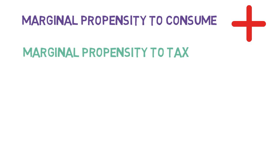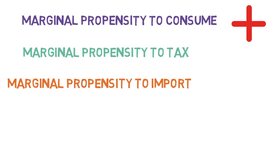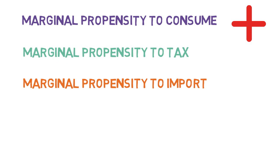However, there are leakages in the economy: the marginal propensity to tax — how much is taken away in tax by the government — and how much of extra spending leaks out of the economy through imports, which is money that leaves the economy through spending on foreign goods. Both of these reduce the size of the multiplier and therefore reduce the effectiveness of fiscal policy, so an open economy tends to have quite a small multiplier.